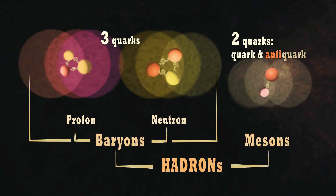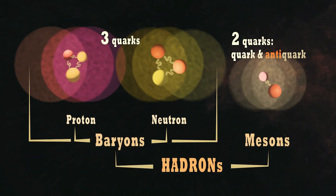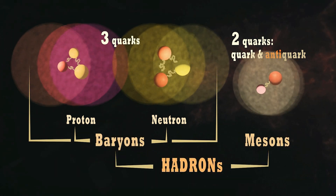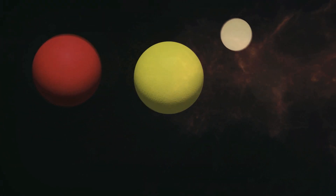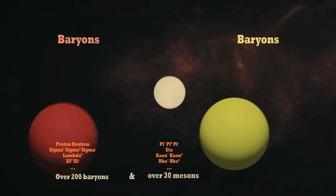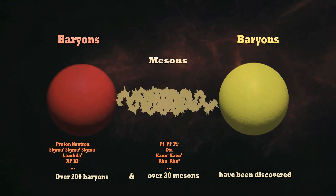Composite particles are called hadrons, consisting of baryons and mesons. Mesons serve to carry the strong force between baryons, like protons and neutrons in atomic nuclei.